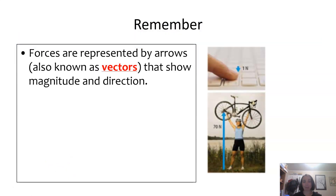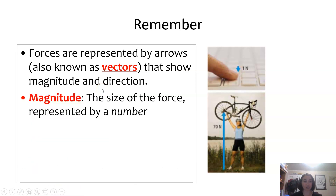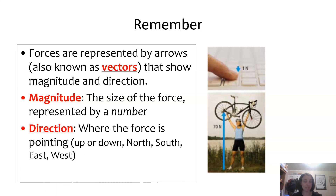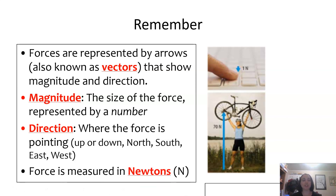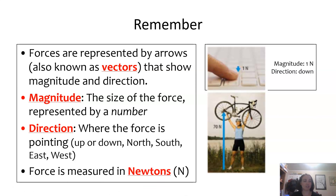If you remember, forces are represented by arrows, also known as vectors, that show magnitude and direction. Magnitude is the size of the force, represented by a number, and direction is where the force is pointing. Force is measured in newtons.